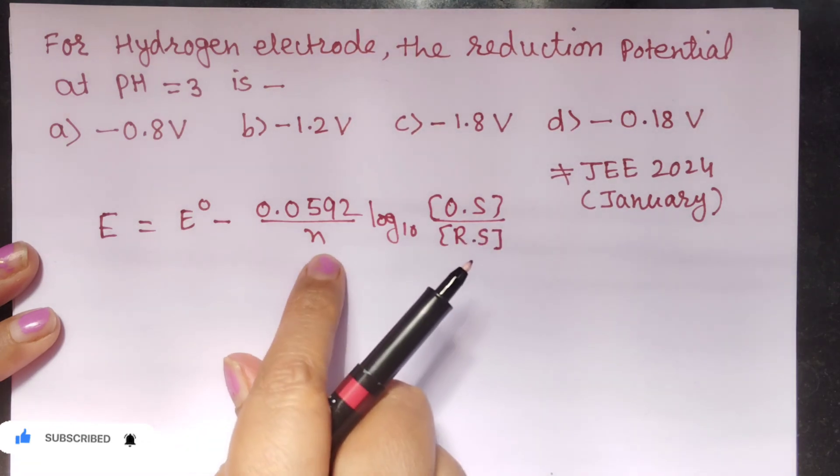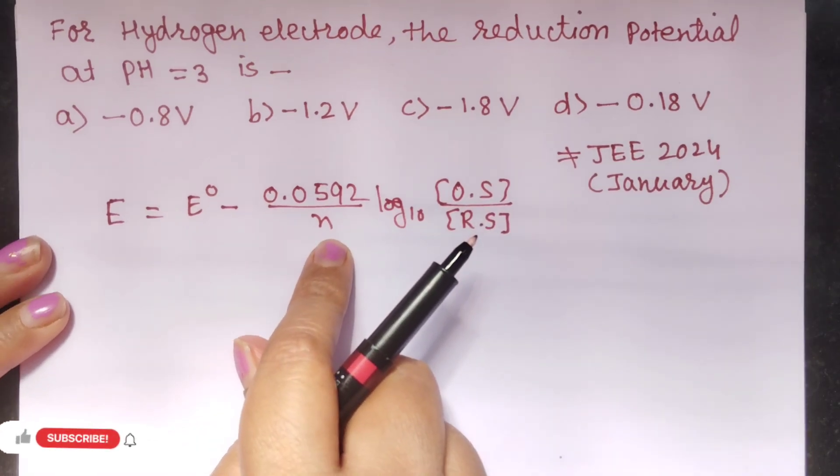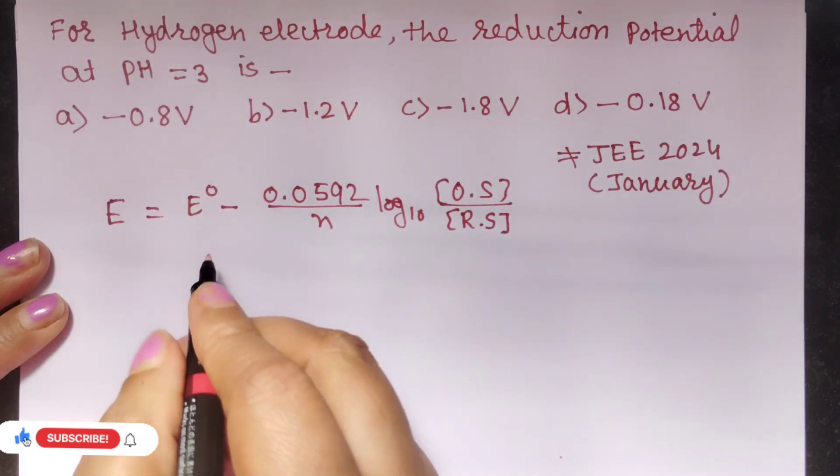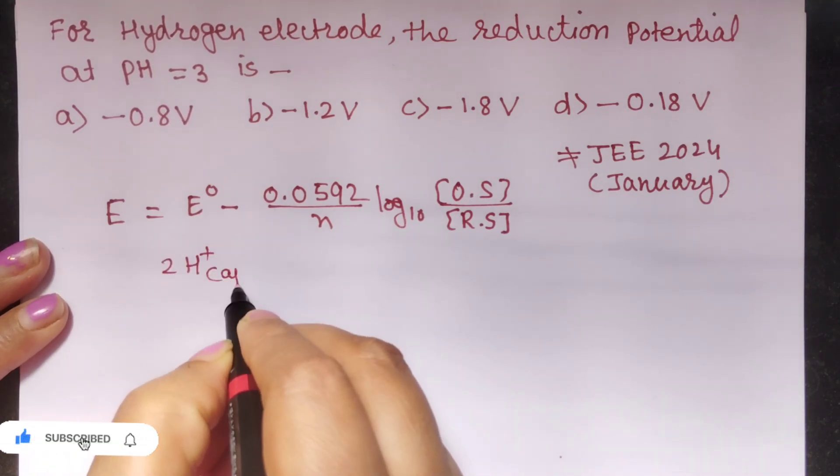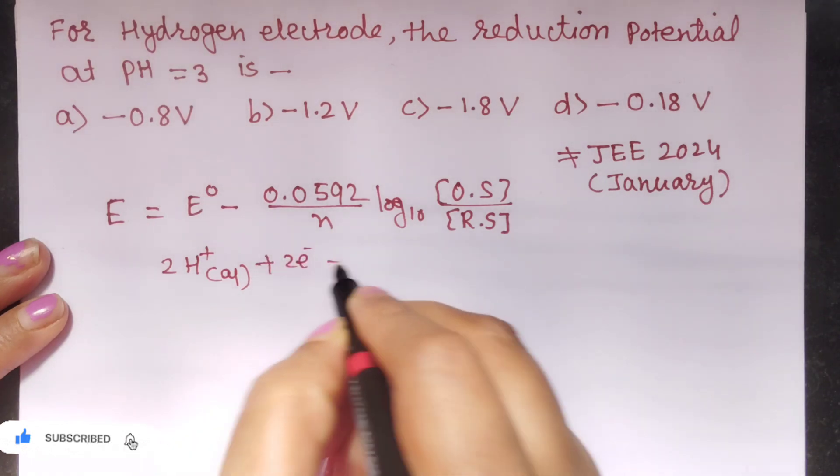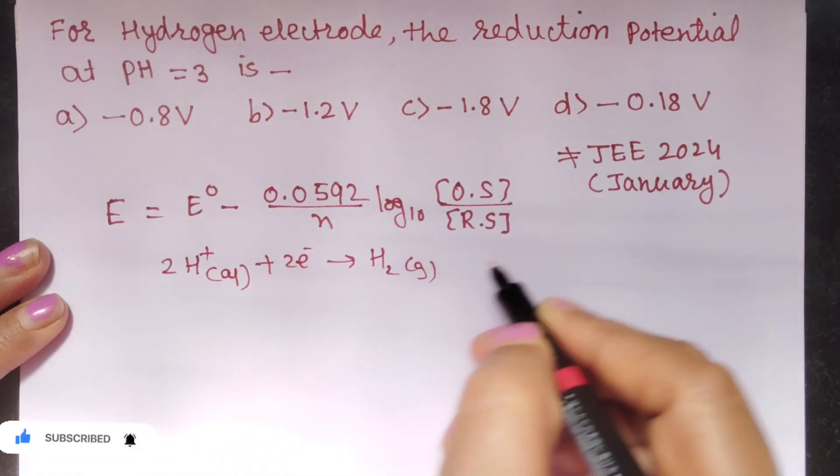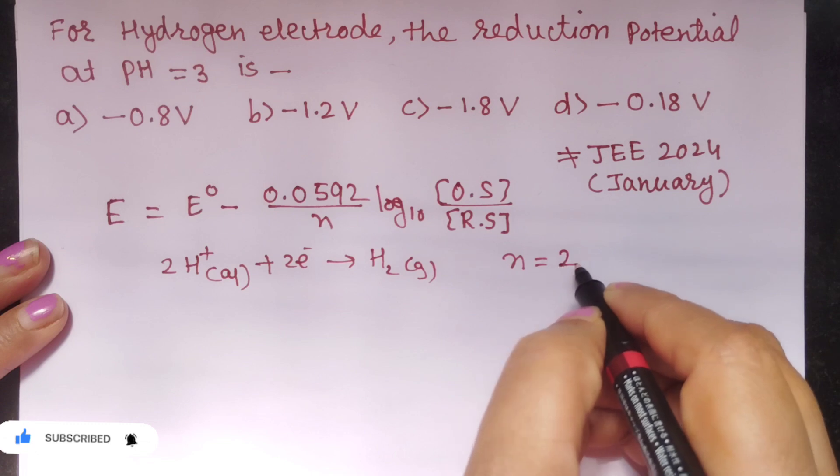So what all things we need is the number of electrons involved in this reduction reaction. So let us first write the reaction. Here it is 2H+ aqueous plus 2e- gives H2 gas. So students here N is equal to 2.